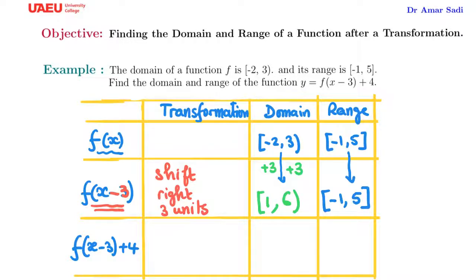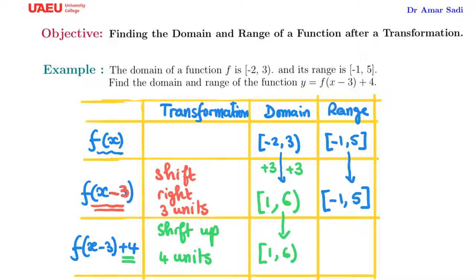The second transformation is the plus 4, which is a shift up by 4 units. This does not change the domain, so the domain is still [1, 6]. But since the graph is going up by 4 units, the range needs to be increased by 4: -1 + 4 = 3, and 5 + 4 = 9.